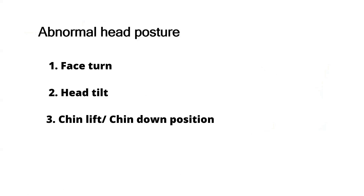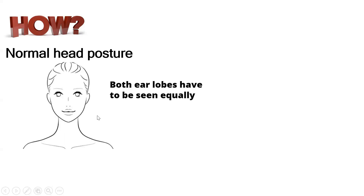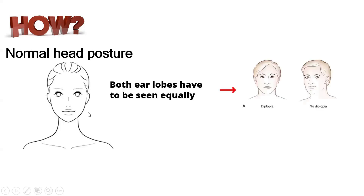There are three types of abnormal head posture: face turn, head tilt, and chin up or chin down position. To identify a face turn, sit in front of the patient — both ear lobes should be equally visible. If one ear lobe is more prominent than the other, the patient is adopting a face turn. This is how you objectively identify a face turn.